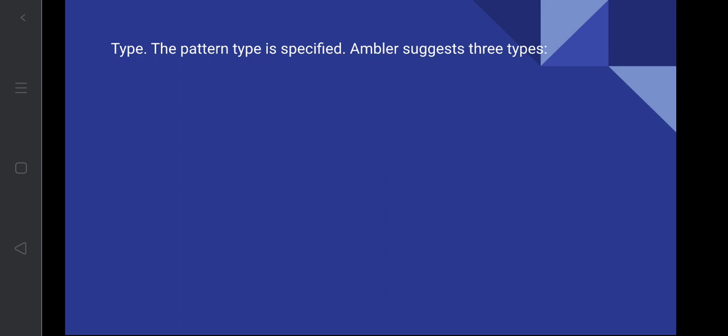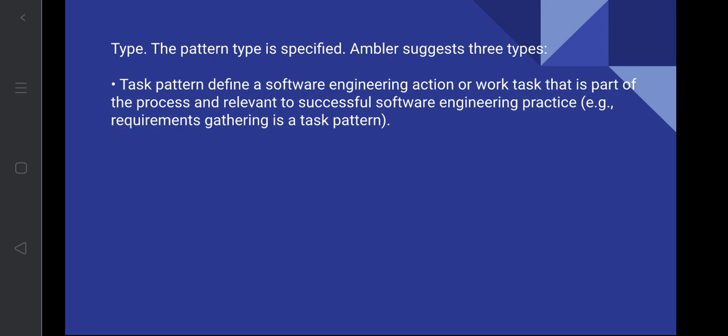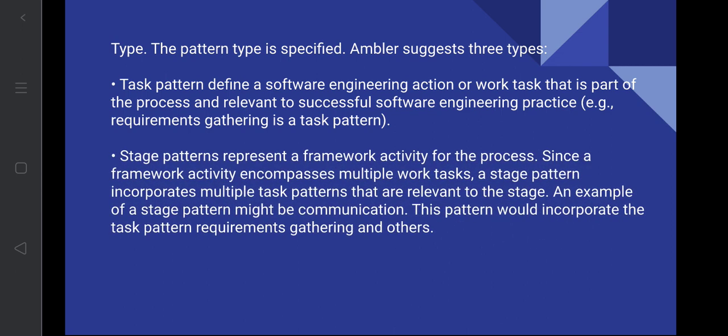The intention of the project really helps to achieve the goal. Next is the type of the pattern. Ambler suggests three types of patterns. The first is a task pattern — a software engineering action or work that is part of the process and essential to successful software engineering practice. For example, requirements gathering: in order to develop software, we first need to know what requirements are needed, so gathering them is a task pattern.